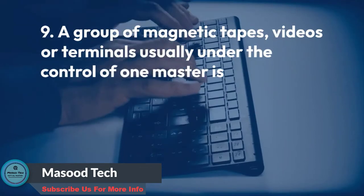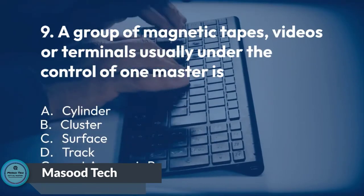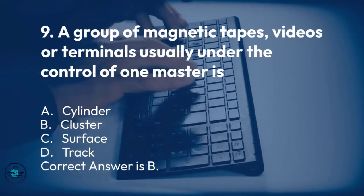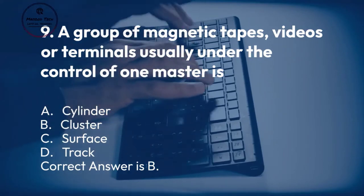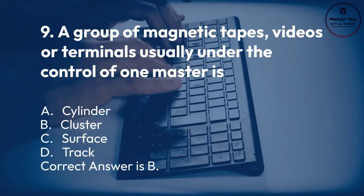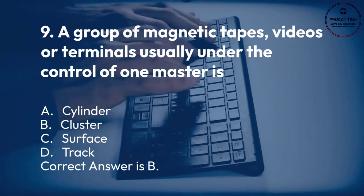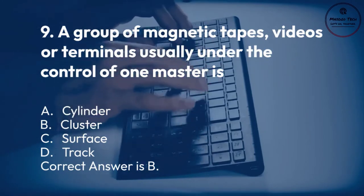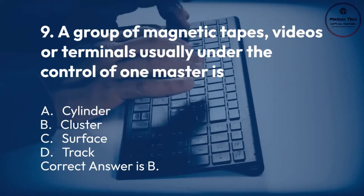Number 9. A group of magnetic tapes, videos or terminals usually under the control of one master is: A. Cylinder. B. Cluster. C. Surface. D. Track. Correct answer is B.